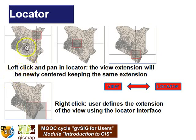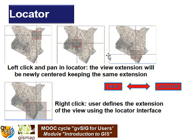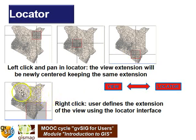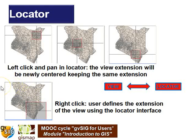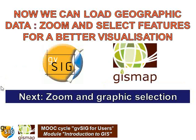In the locator, if I left-click and pan, the view extension will be re-centered while keeping the same zoom level — there is a direct link between the view and the locator. If I right-click, I can define the extension of the view using the locator interface, and the geographic view will update automatically. So now we can load geographic data, zoom, and select features. Better visualization will be the next step — keep in touch.